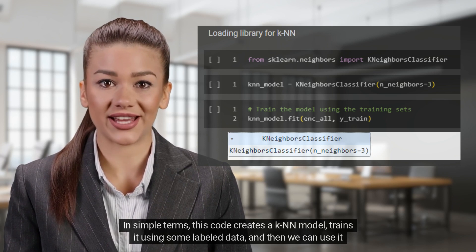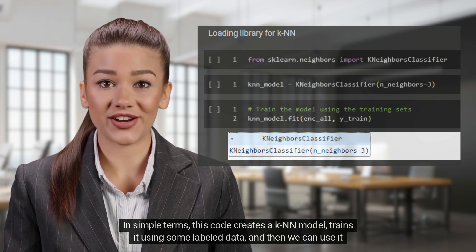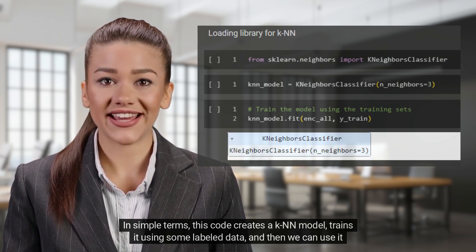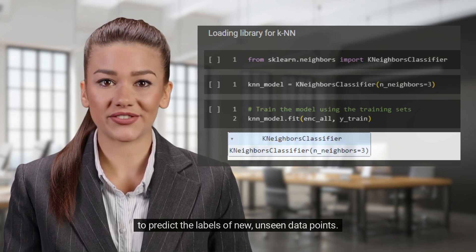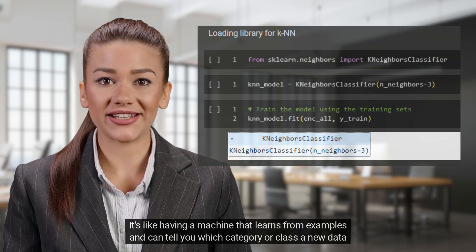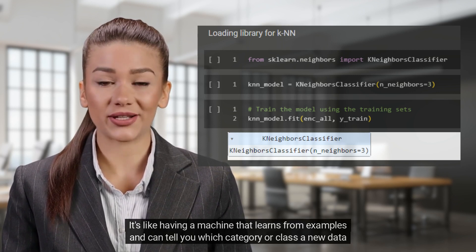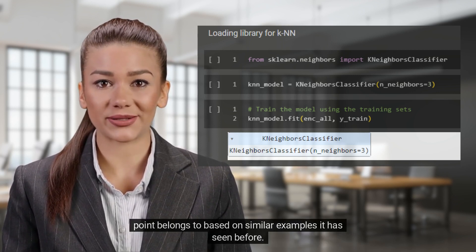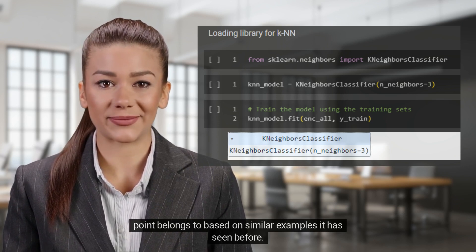In simple terms, this code creates a K-N-N model, trains it using some labeled data, and then we can use it to predict the labels of new, unseen data points. It's like having a machine that learns from examples and can tell you which category or class a new data point belongs to based on similar examples it has seen before.